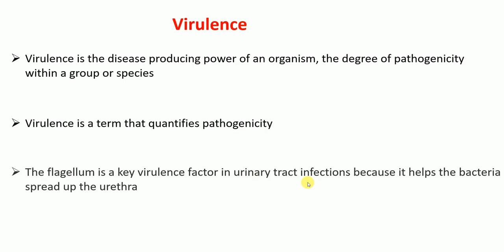For example, the flagellum of bacteria is a key virulence factor in urinary tract infections because it helps the bacteria spread up the urethra, thereby increasing the disease outcome. That is why the flagellum is considered a virulence factor. So virulence is the disease-producing power of an organism — it is the degree, or quantity, of pathogenicity.